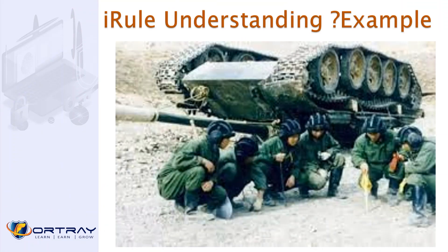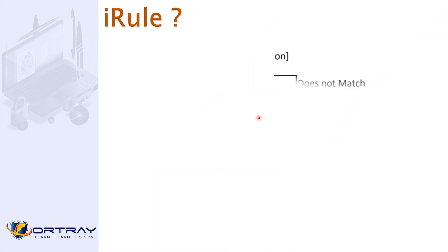To understand iRules, look at this picture of military personnel discussing a plan. They may have a couple of plans: Plan A — if successful, they enter the enemy base; if not, they back out. This is essentially an if-statement logic: if we achieve this, we do this; if we don't, we back out. That's the kind of planning that mirrors how an iRule works.